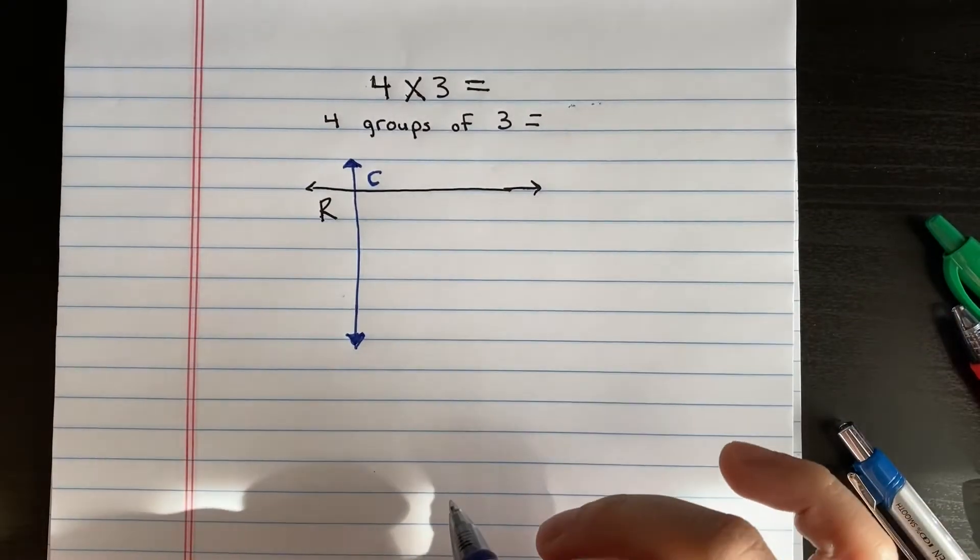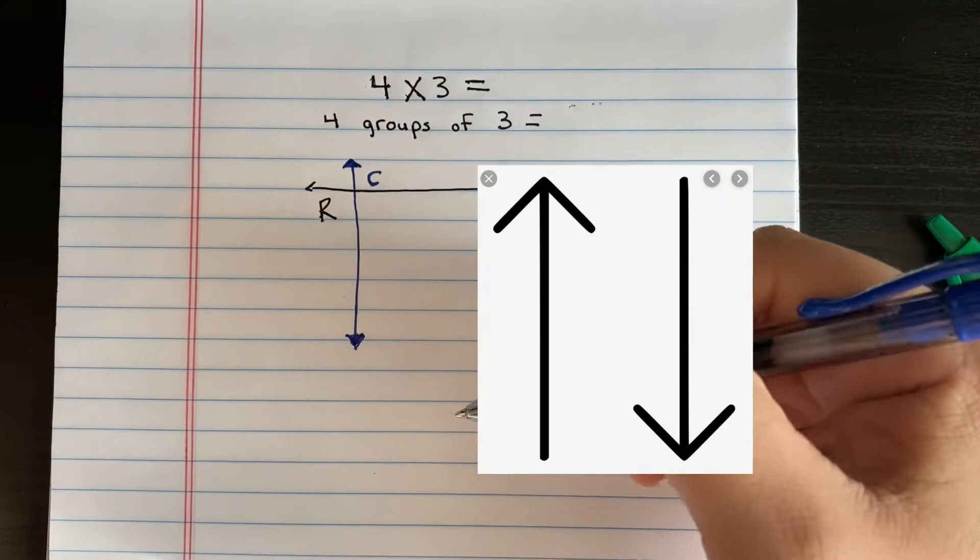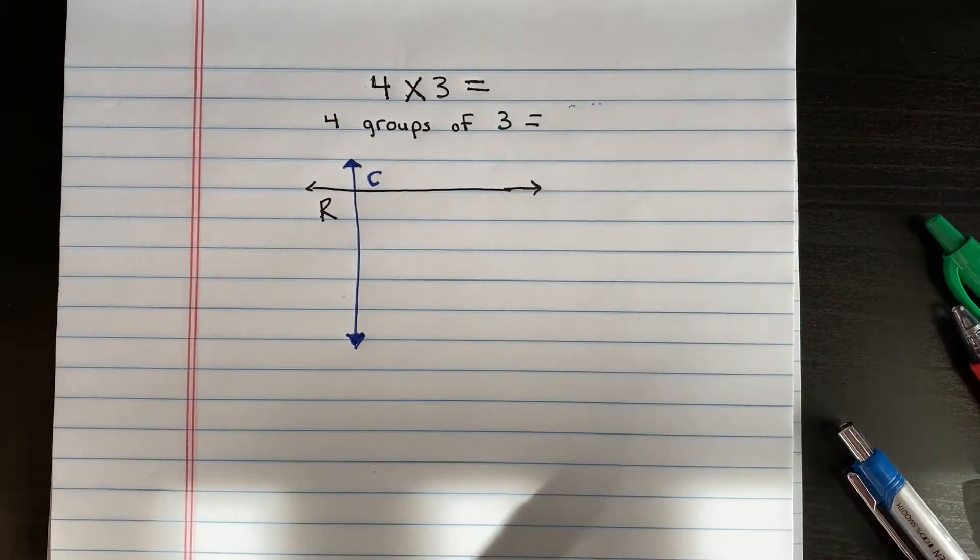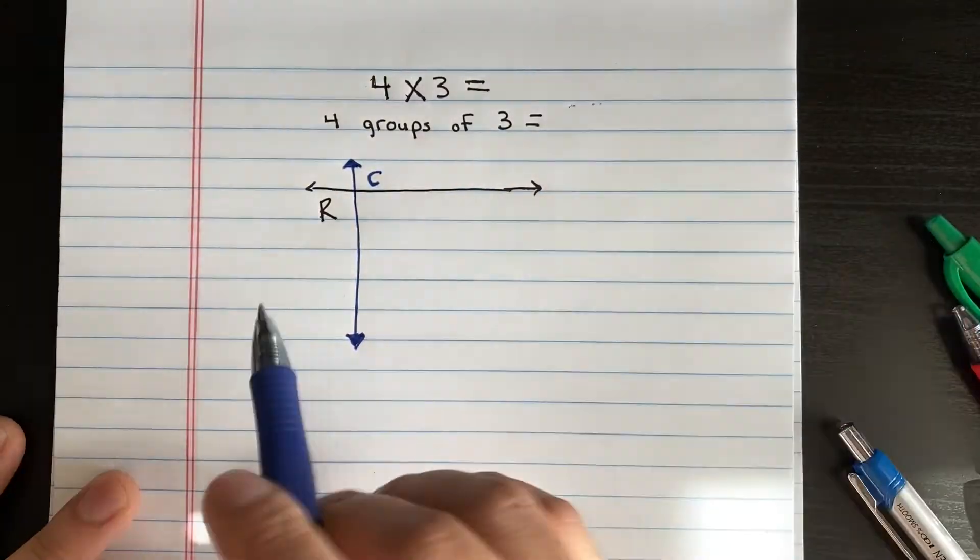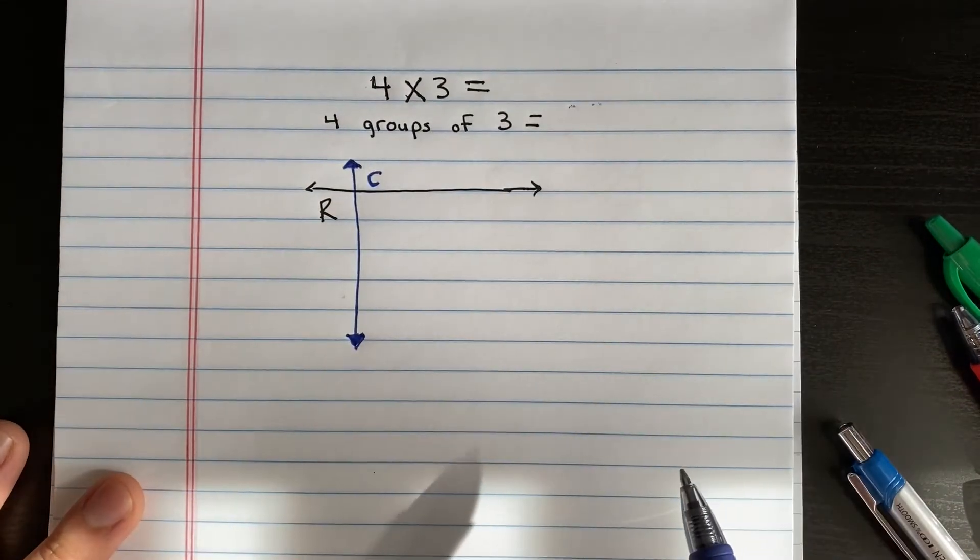Okay, so now that we got that in a way, a row goes left to right, a column goes up and down, and now we're going to make our array model. Okay, let's go. So you might have seen the problem four times three, or you might look like this, four groups of three.